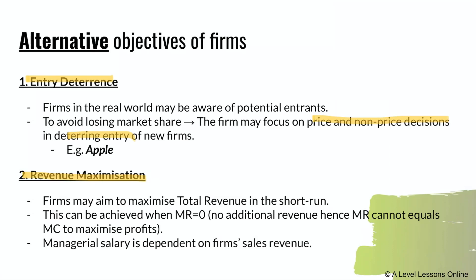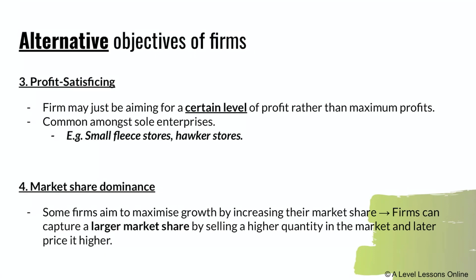Revenue maximization is when a firm wants to maximize total revenue in the short run. This occurs when marginal revenue equals zero — meaning no additional revenue is being generated, so MR cannot equal MC, which would be the profit-maximizing level. Managerial salary is also dependent on sales revenue, so some firms simply want to maximize revenue, collect money, and pay themselves — not looking to maximize profits.